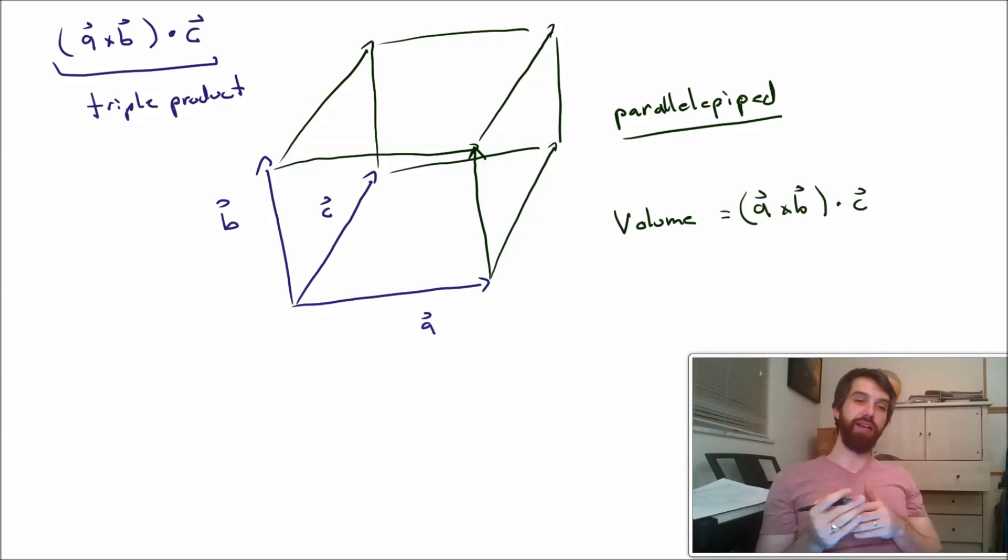So, the takeaway here is that if I give you two vectors, the two vectors can be thought of as defining a parallelogram, and the area of that parallelogram is given by the cross product. If I give you three vectors, those three vectors are going to define a parallelepiped, and the volume of that parallelepiped is given by the triple product.